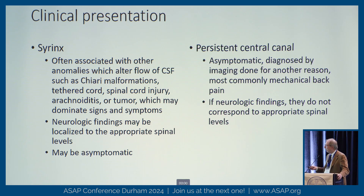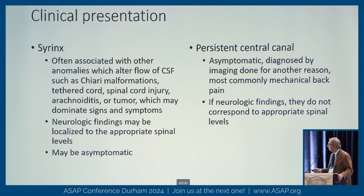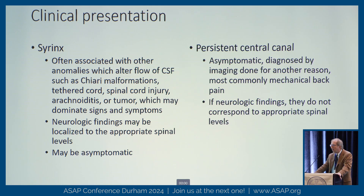If there are neurologic findings, they're often very nicely localized to the appropriate levels if we see a syrinx. Although the syrinx can be asymptomatic — patients may have a Chiari and even a holocord syrinx and be surprisingly normal neurologically. With a persistent central canal, they're often asymptomatic, incidentally found because someone got an MRI for another reason — most commonly mechanical back pain without radiation in a nerve root or spinal cord pattern.